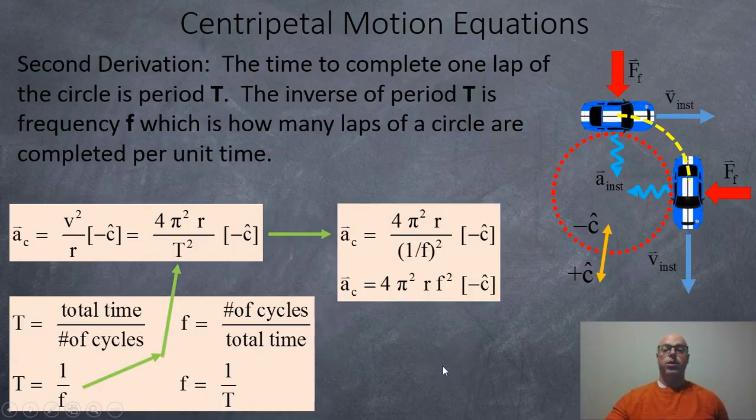The other formula is using frequency. So the time to complete one lap or one cycle is the period. But the number of cycles you complete per unit time is known as frequency. So if you take a look at the formula here, period is total time over the number of cycles. And frequency is the inverse or the opposite of that, it's the number of cycles per total time.